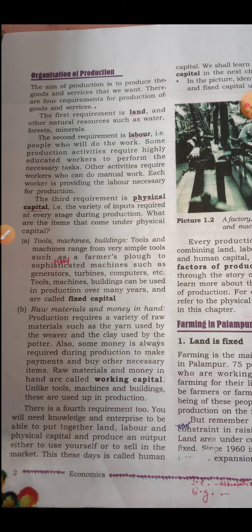Production requires a variety of raw materials, such as yarn used by the weaver and clay used by the potter. Some money is always required during production to make payments and buy other necessary items. Raw materials and money in hand are called working capital.